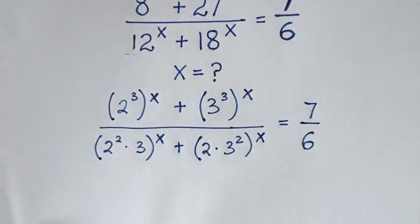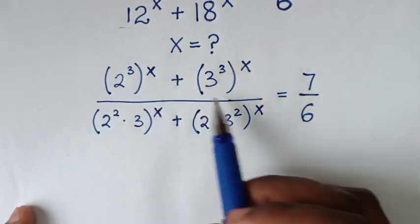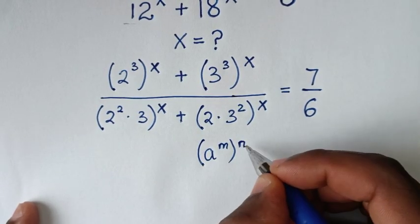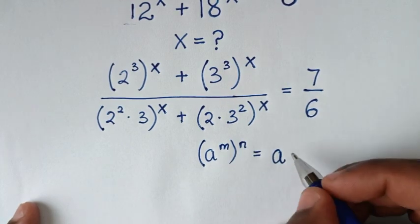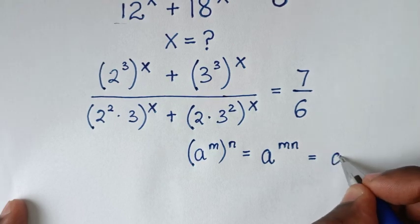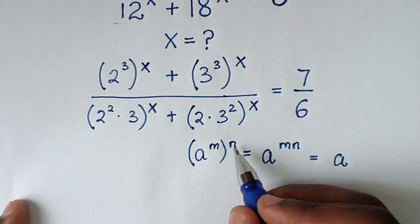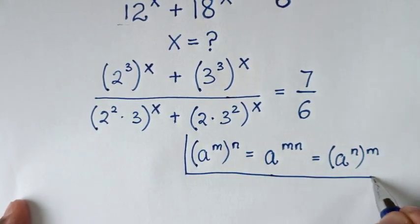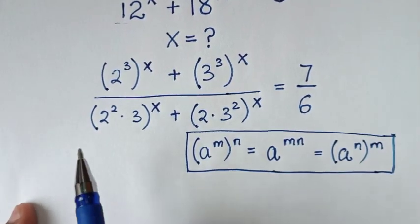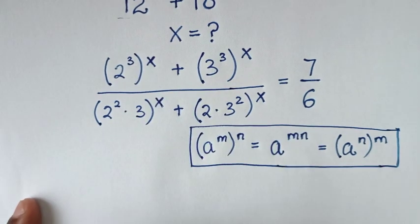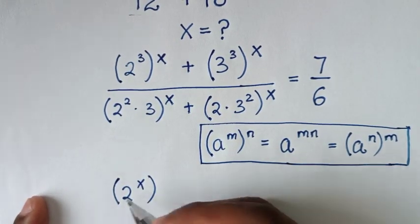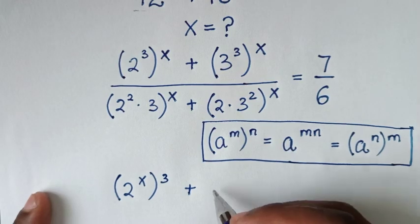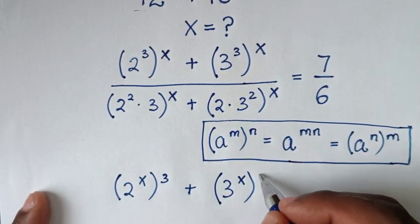In the next step we will exchange the powers. We apply the exponential rule: a^m raised to the power n equals a^(mn). So we take the power of m inside and the power outside the bracket. Applying this rule, 2^(3x) becomes (2^x)³ and 3^(3x) becomes (3^x)³.